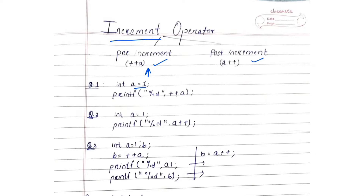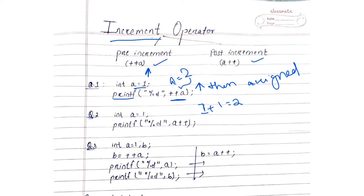Let's solve some examples. Here a is equal to 1. In the printf statement with ++a, it is a pre-increment, meaning first increase then assign. So value of a is 1, it will be increased: 1 + 1 = 2. Now the value of a is 2, so 2 will be assigned — the output is 2.